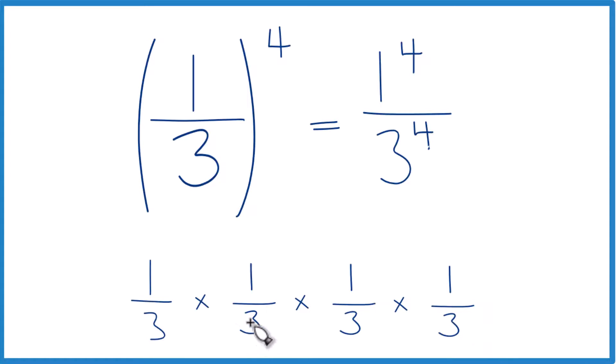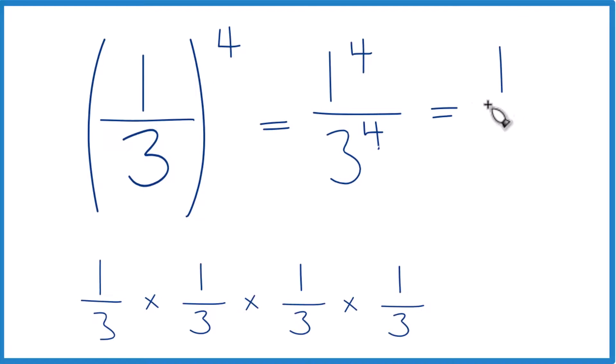Down here, 3 times 3 times 3 times 3, that's 3 to the fourth. So 1 to the fourth equals 1. 3 to the fourth is 3 times 3, that's 9. 9 times 3 is 27. 27 times 3 is 81.